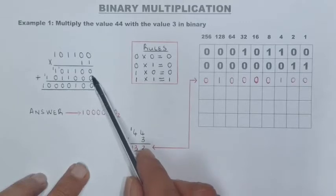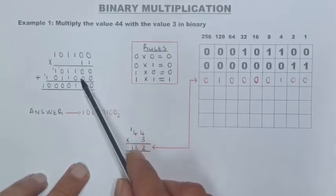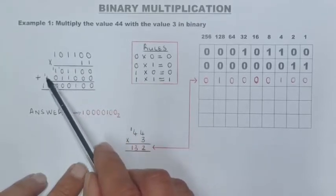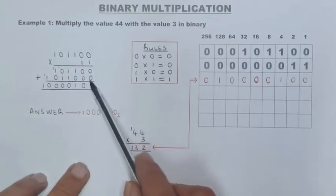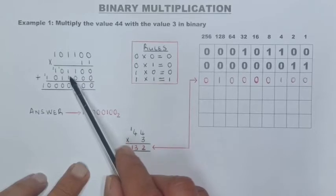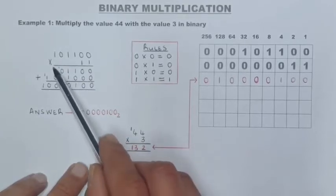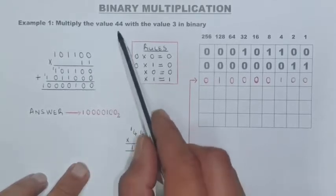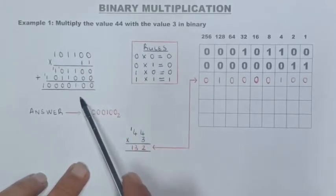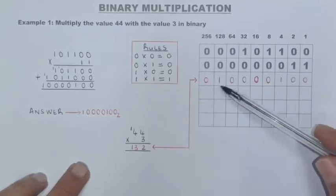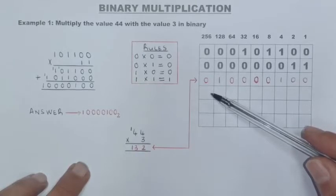Next, we put a placeholder because we're multiplying with the second digit and need to start in the second column. One times zero is zero. One times zero is zero. One times one is one. One times one is one. One times zero is zero. One times one is one. Now we add these two binary numbers: zero plus zero is zero, one plus zero is one, one plus one is zero carry one, continuing carries, giving the final answer for 44 multiplied by 3. Check this value against the code system to verify your answer is correct.